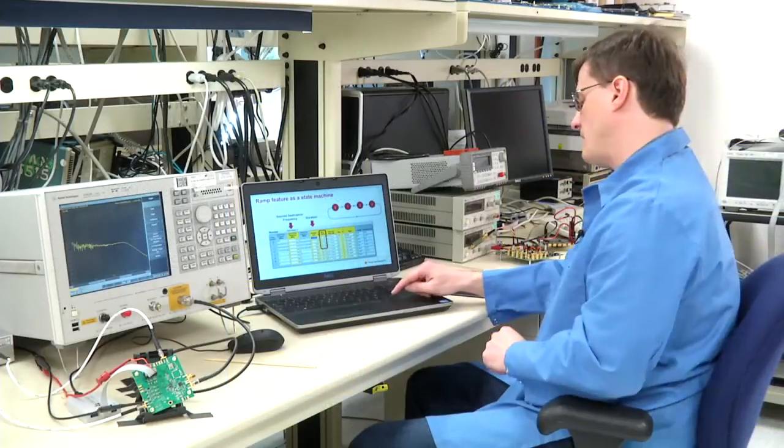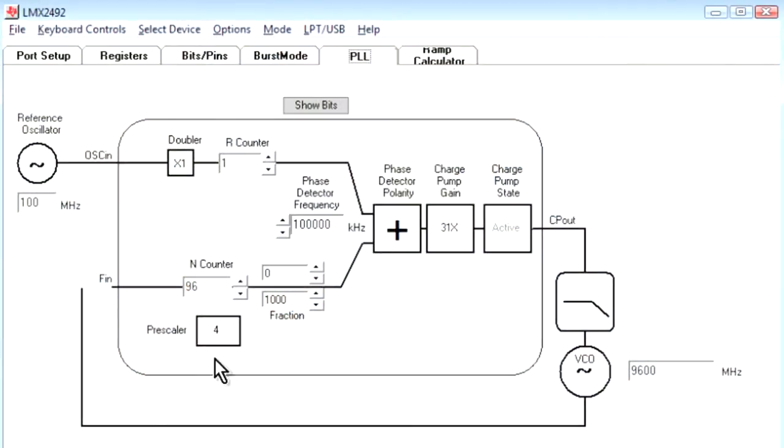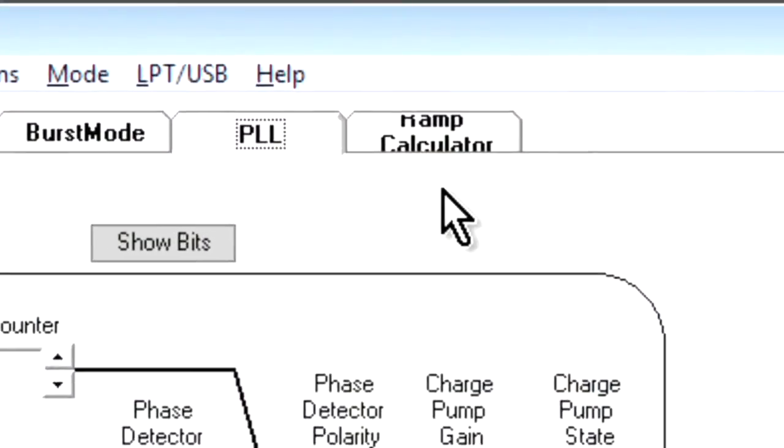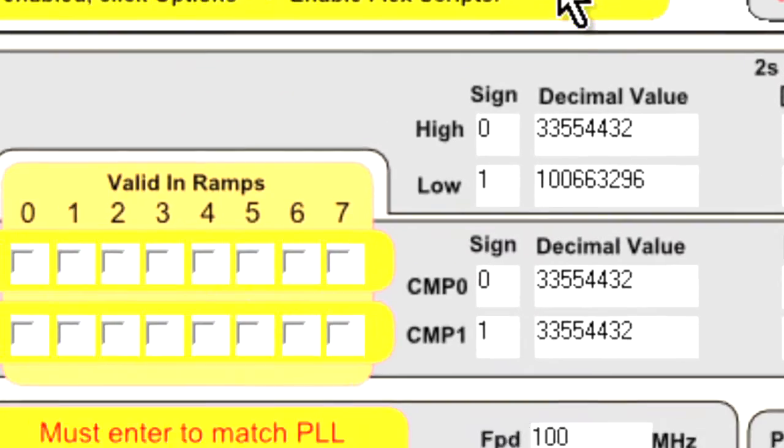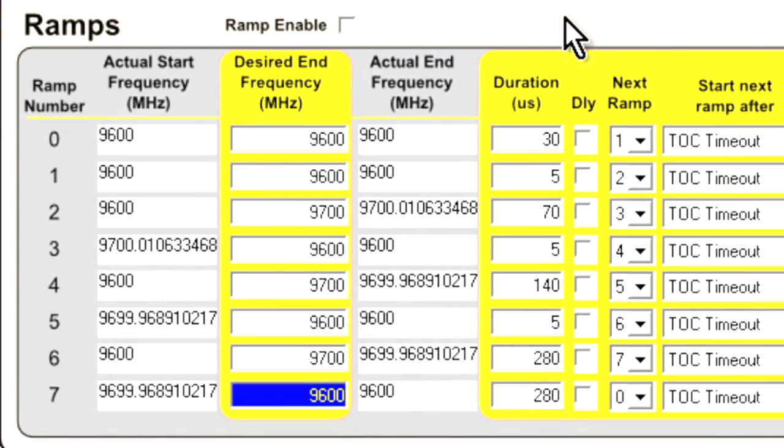Let's take an example on the live software. On CodeLoader software, there is a ramp calculator tab. That's where you need to go to set the actual ramping. Here we already set some ramp in the interest of time, and I'm just going to click ramp enable here. And that should enable the ramp.